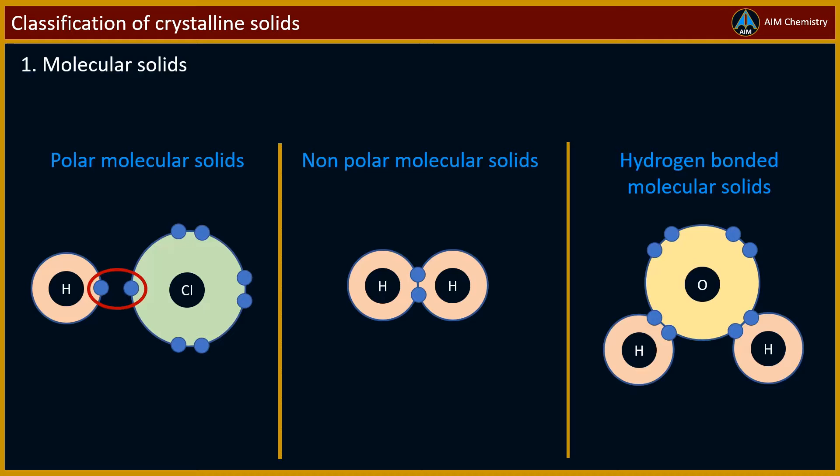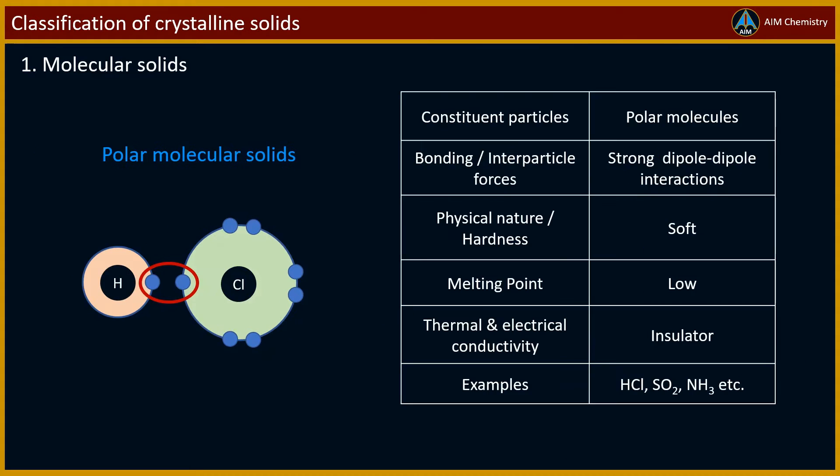First is molecular solids, which is further divided into three categories: polar molecular solids, non-polar molecular solids, and hydrogen bonded molecular solids. Let's see one by one. For learning all types of crystalline solids, we will see six important points.